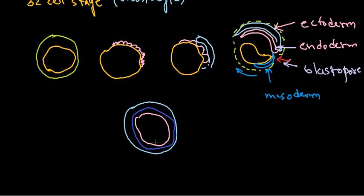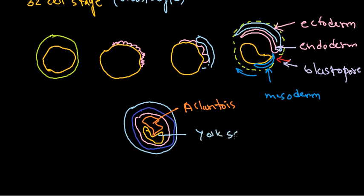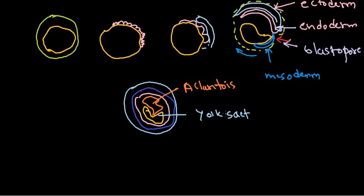Inside that there will be a small yolk sac region, and the developing embryo will be attached there in the allantois. A new formation called the allantois will be there — we'll talk about it later. It will look something like this where the developing embryo will grow. This is the yolk sac, and these are the organizing systems.